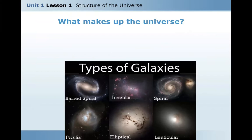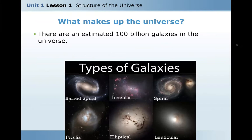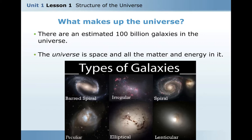What makes the universe? Types of galaxies — we have barred spiral, irregular, spiral, elliptical, and lenticular. There are an estimated 100 billion galaxies in the universe. The universe is space and all the matter and energy in it.